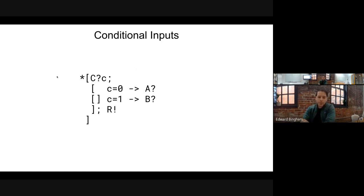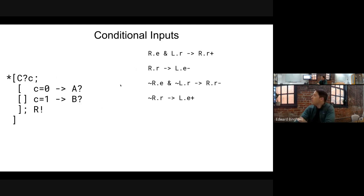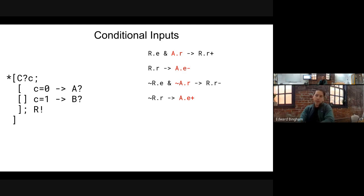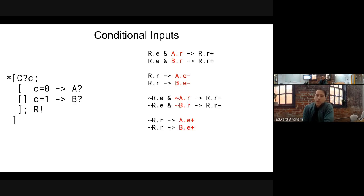This conditionally acknowledges inputs. We'll start with our standard WCHB reshuffling — we wait for the input request, lower the input enable, wait for the input request reset, raise the input enable; on the output side we raise the output request and wait for the output enable to trigger. We need to take this input and replicate it for A and B, just as we did before when receiving or sending multiple outputs — we're going to replicate across this channel. We pretend we've got two different conditions: one for receiving on A and sending on R, one for receiving on B and sending on R.